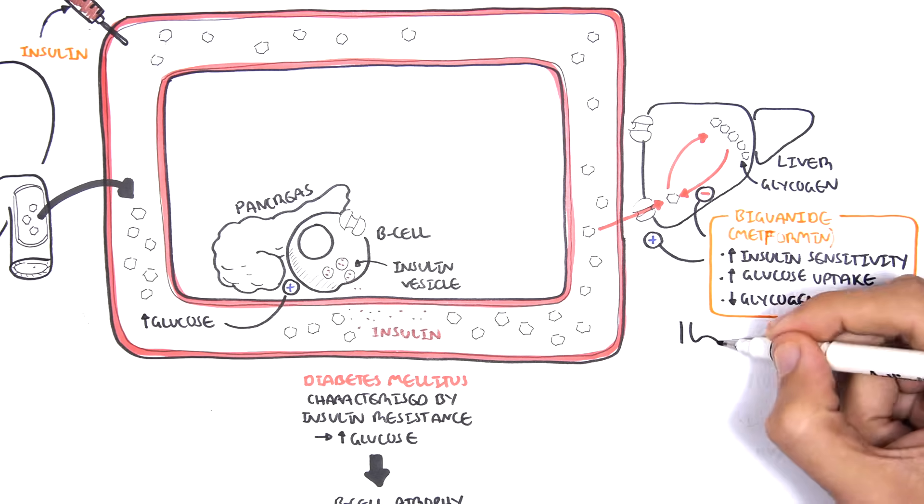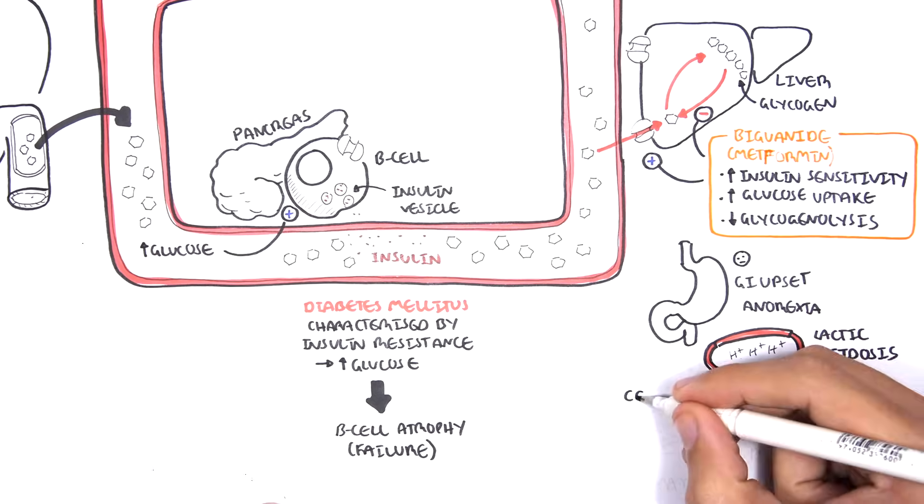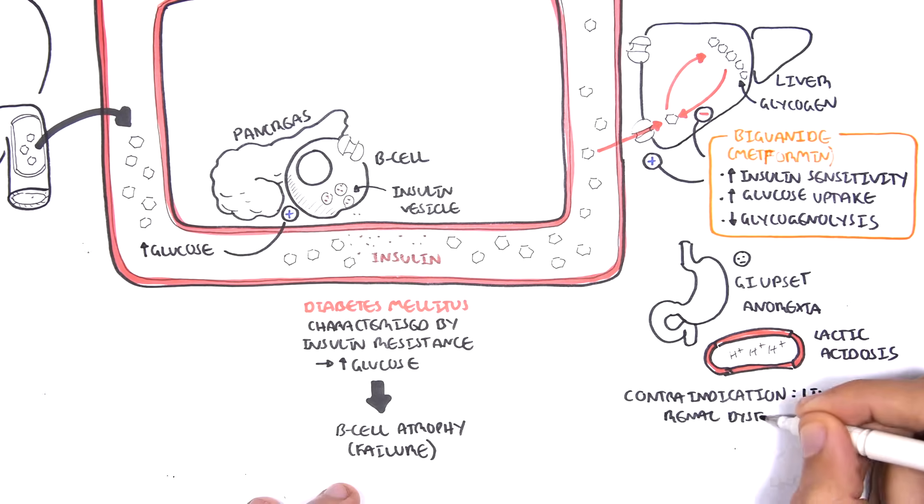The side effects of metformin include mainly gastrointestinal upset, anorexia, and a very important condition, lactic acidosis. Contraindications are for those who have liver and renal dysfunction. So you don't use metformin for these patients, or you have to be wary.